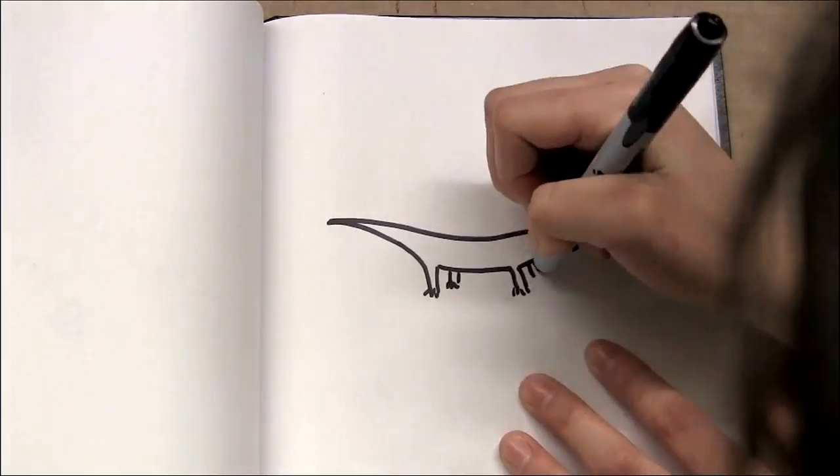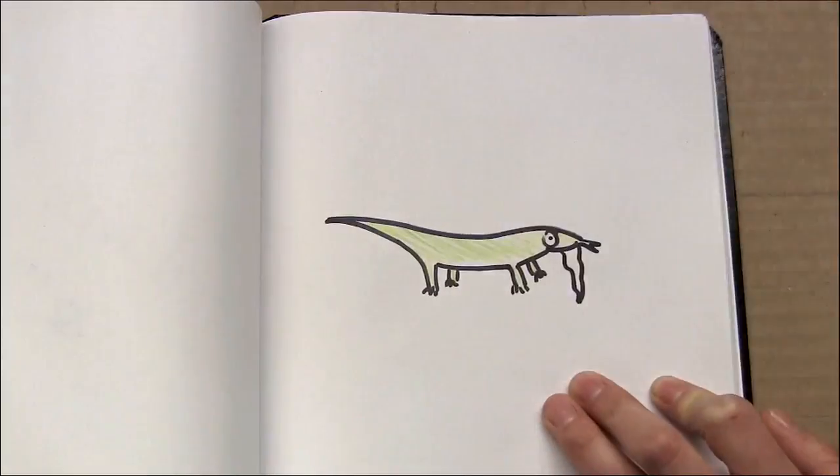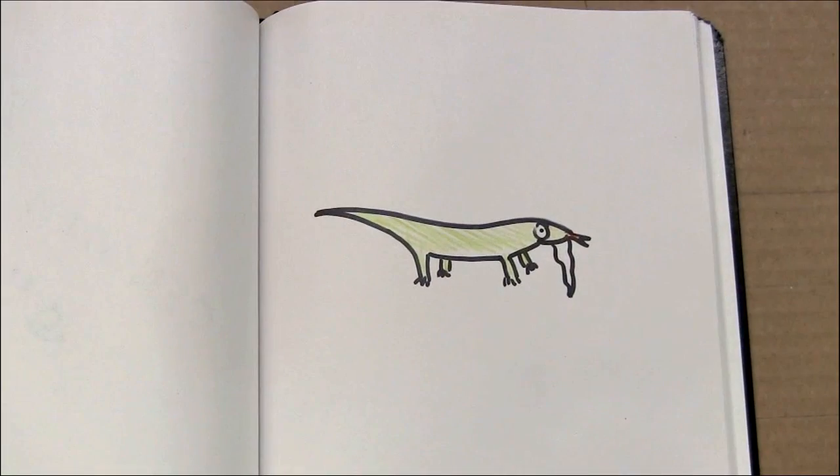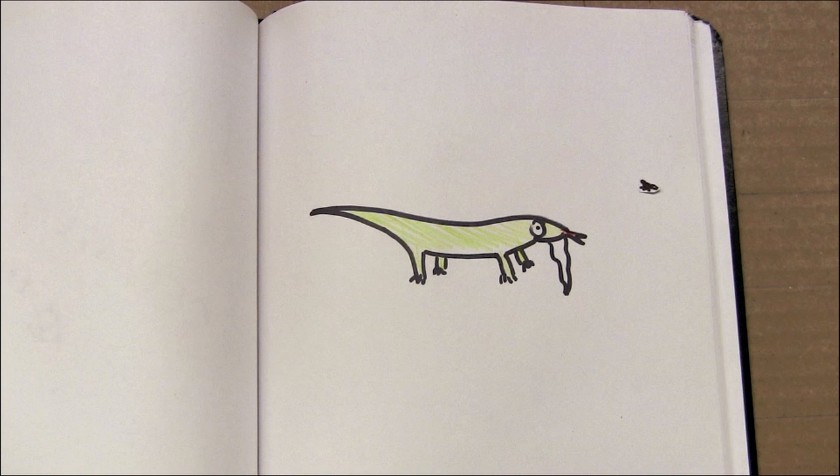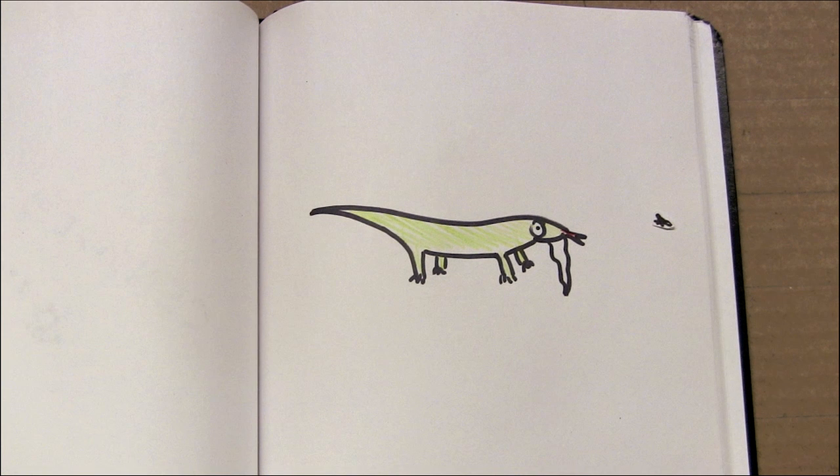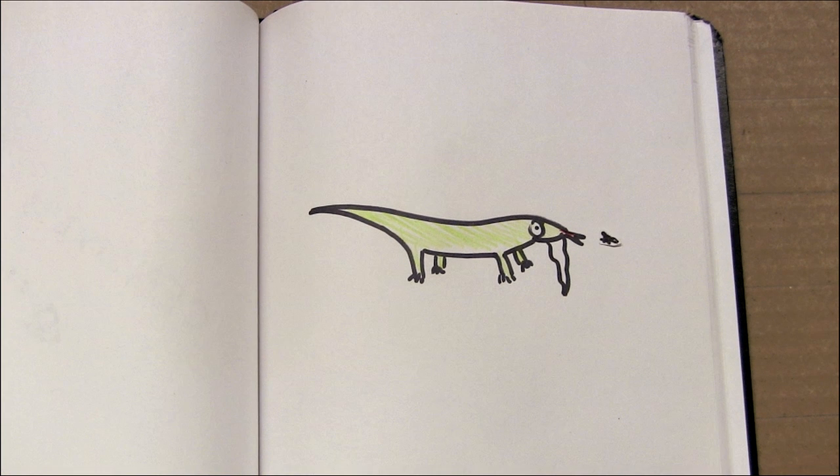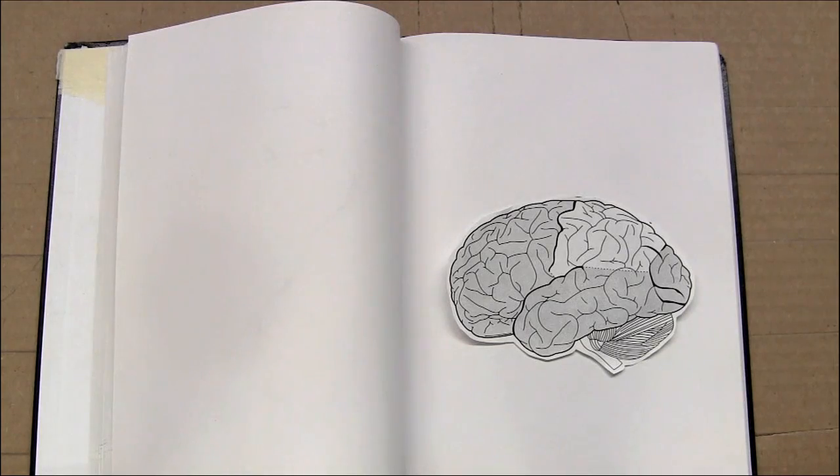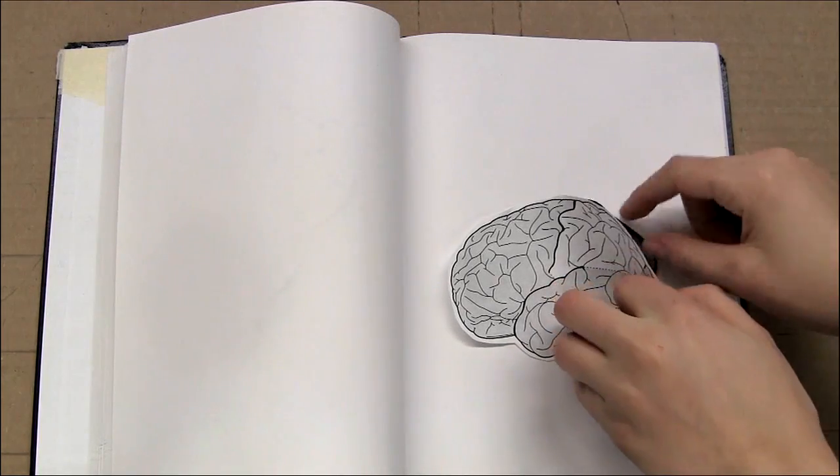This part of our brain is similar to a lizard's brain in terms of function. This is because we both share a common ancestor. Our brainstem is our reflex response system, connected to deep drives to act in certain ways, for instance by eating when you're hungry. But we don't only respond automatically to things, we also have feelings.